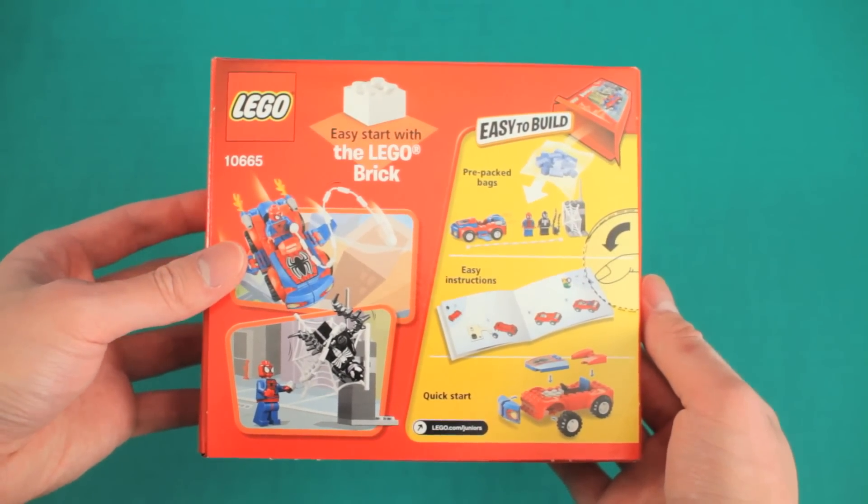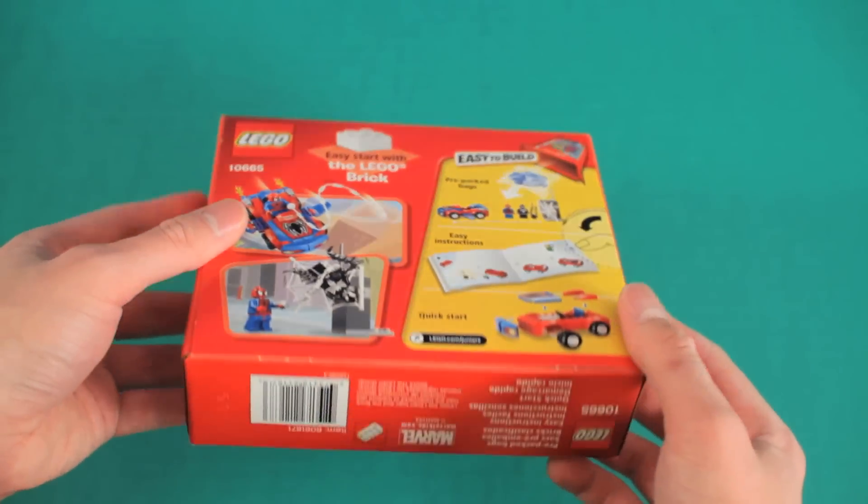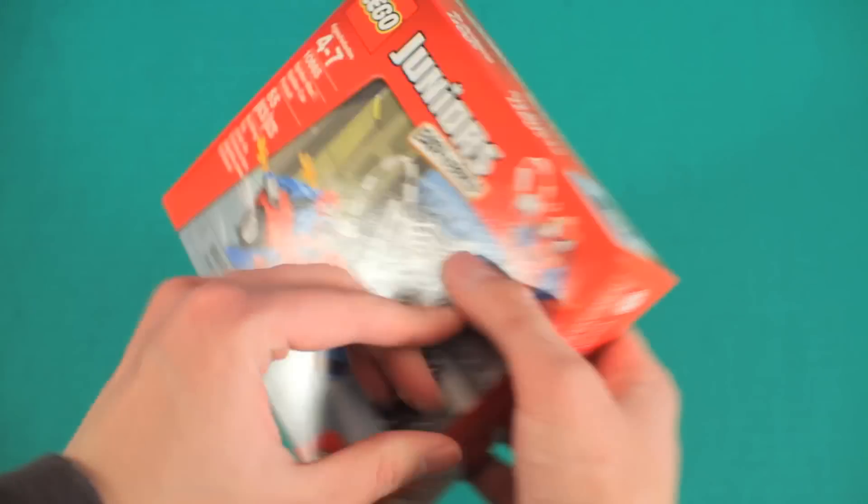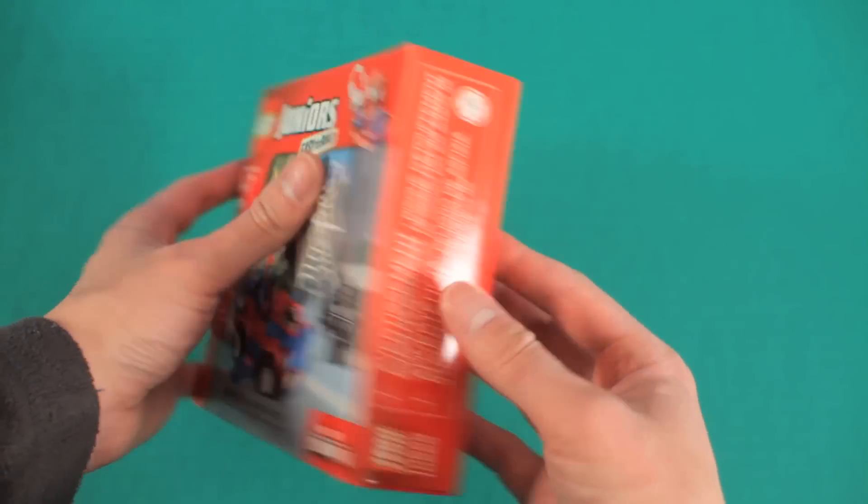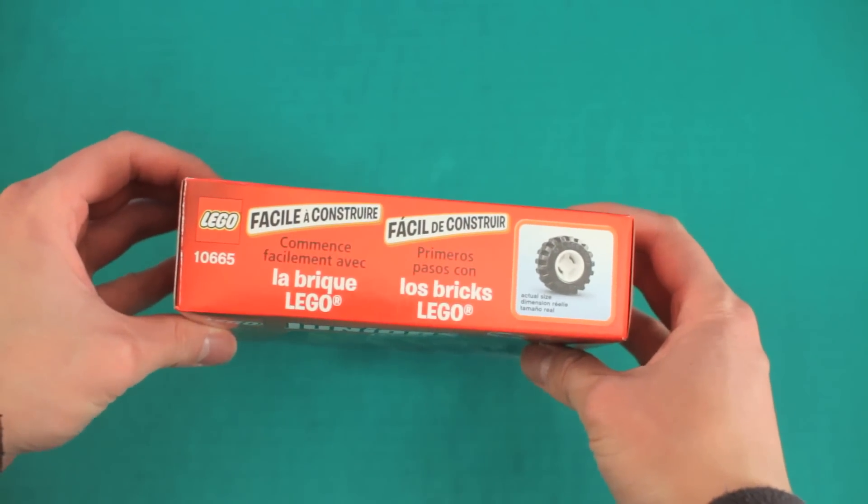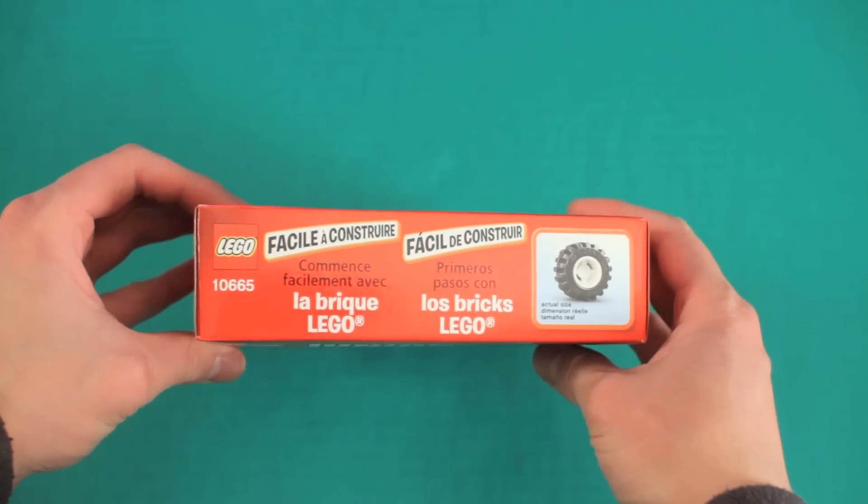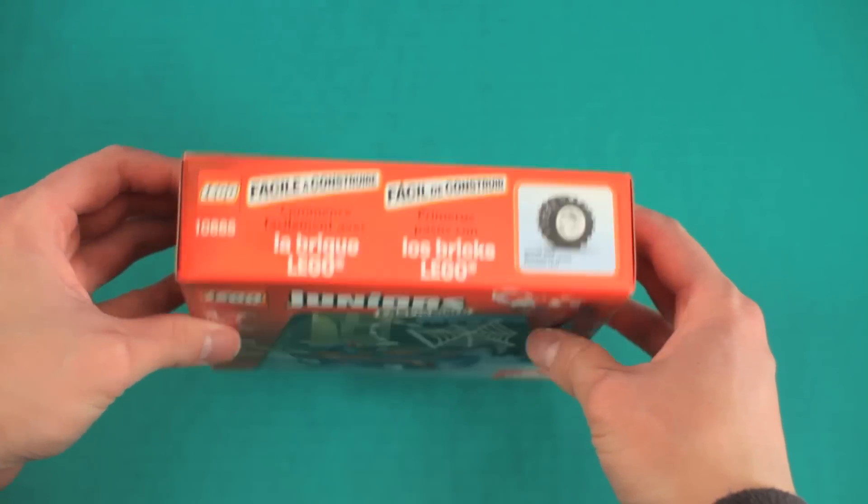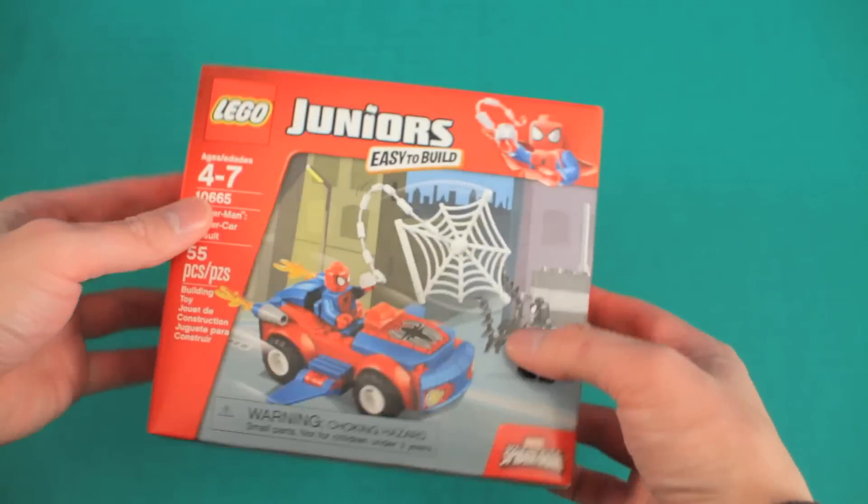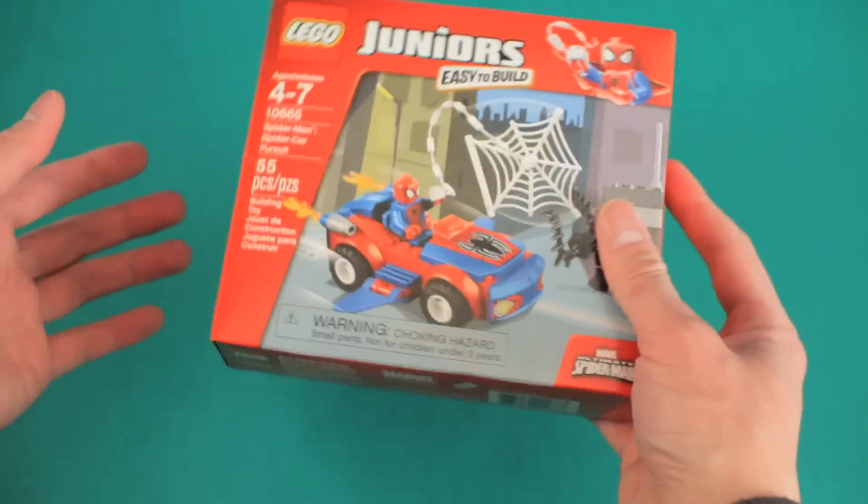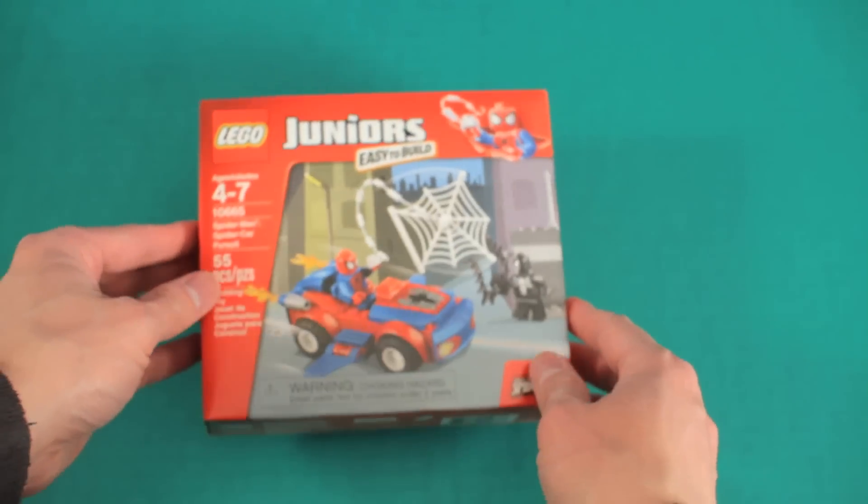Now this comes with a car for Spider-Man and I think it also comes with Venom. It's good for ages four to seven. And I think there's 55 pieces, so this shouldn't be too hard.